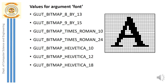Several font styles can be used as the first parameter for glutBitmapCharacter. These include GLUT_BITMAP_8_BY_13, where 8 pixels along the row and 13 pixels along the column define the character; GLUT_BITMAP_9_BY_15; GLUT_BITMAP_TIMES_ROMAN_10; GLUT_BITMAP_TIMES_ROMAN_24; GLUT_BITMAP_HELVETICA_10; GLUT_BITMAP_HELVETICA_12; and GLUT_BITMAP_HELVETICA_18. These define the font size and style.